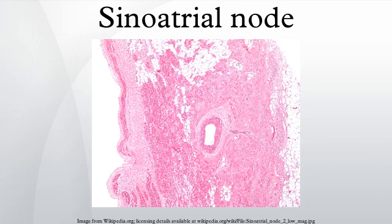The sinoatrial node was first described in 1907 by Arthur Keith and Martin Flack. This article uses anatomical terminology.